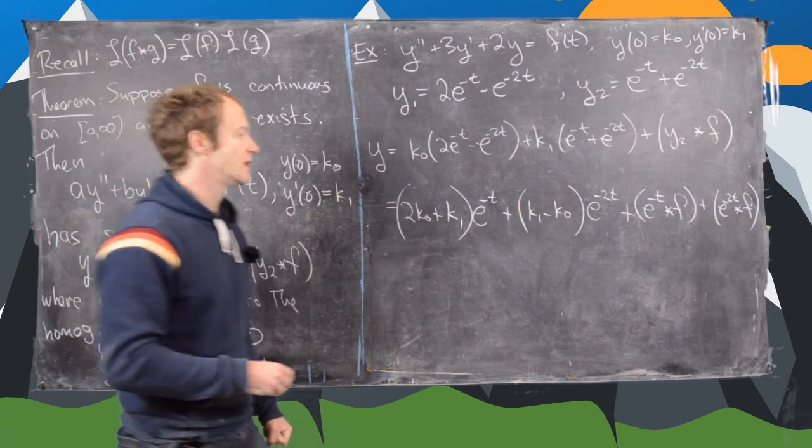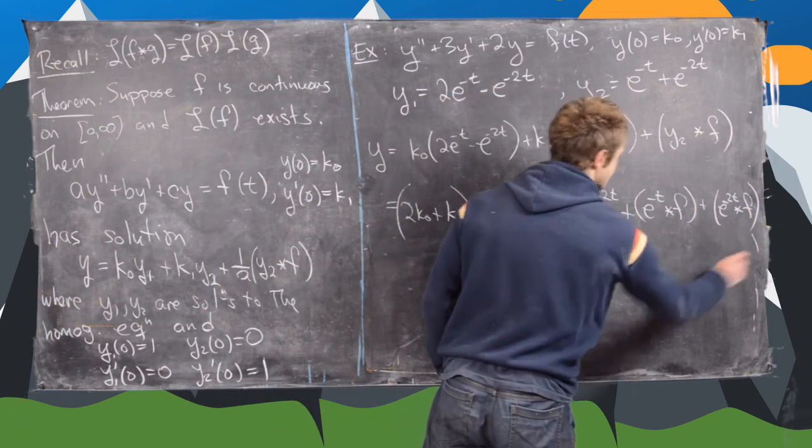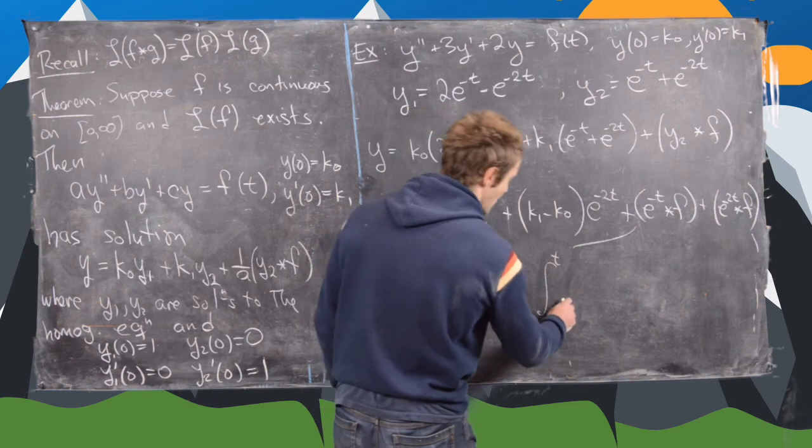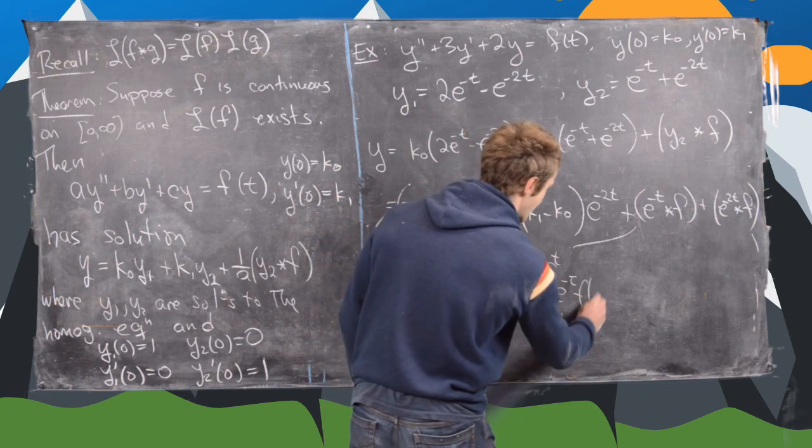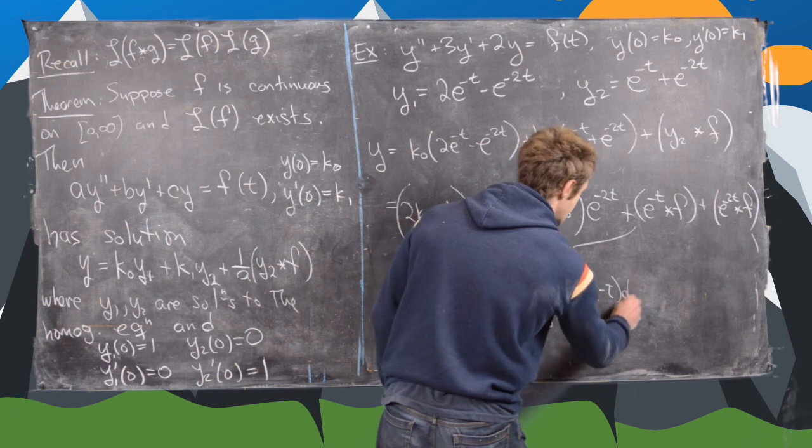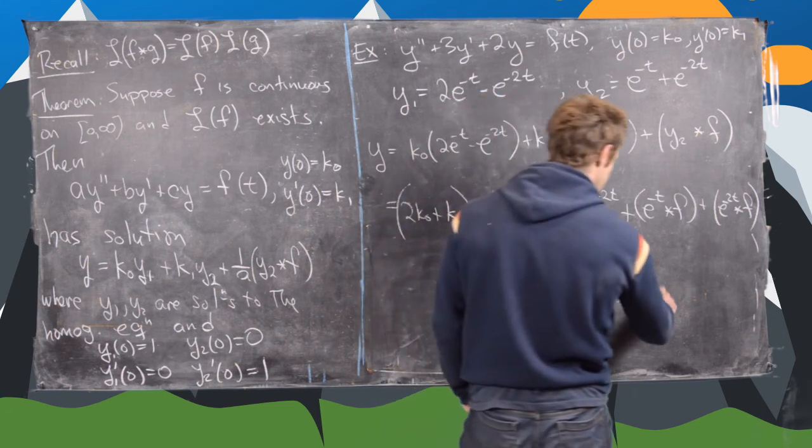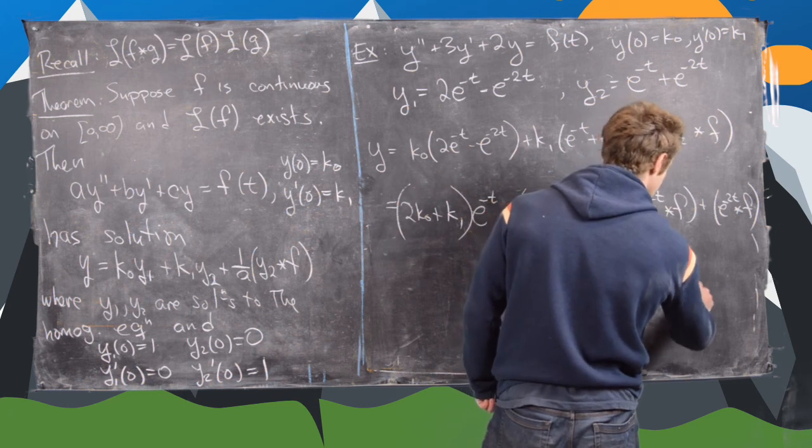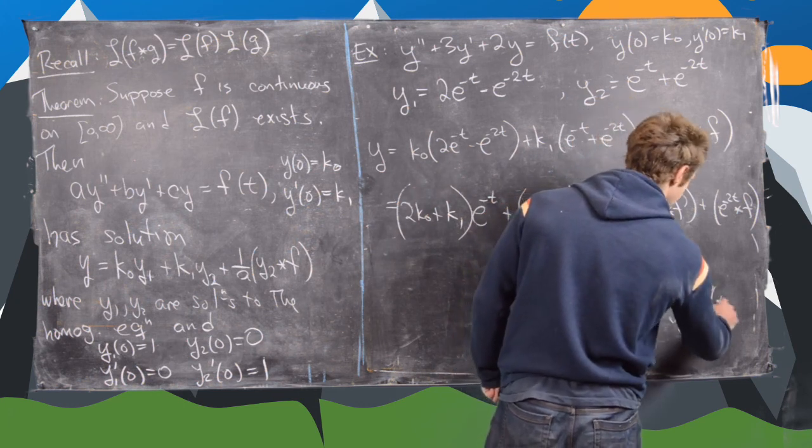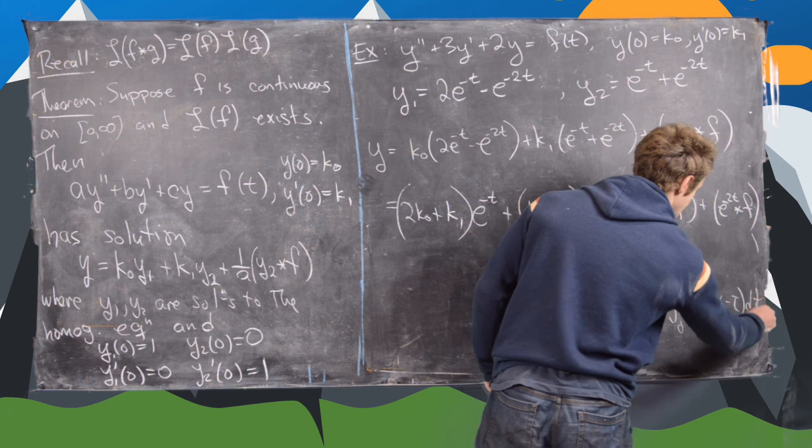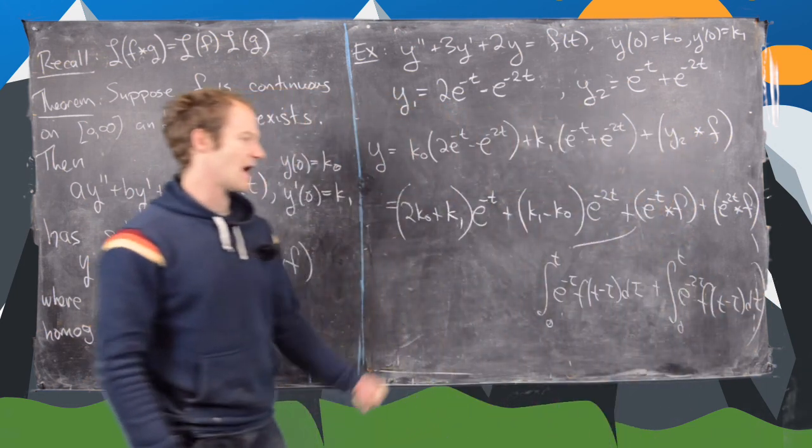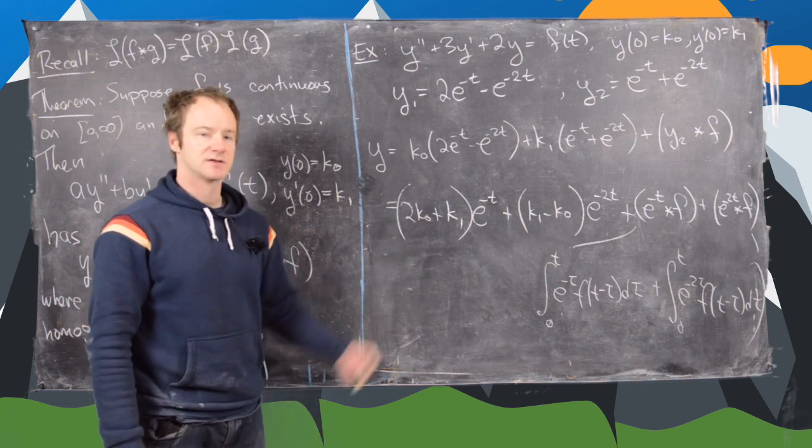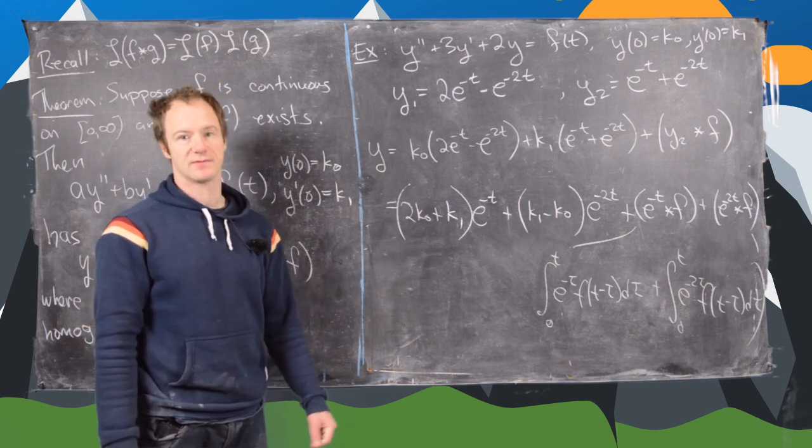Although what we could do is also write this as follows. So this is the integral from zero to t of e to the minus tau and then f of t minus tau d tau. And then this one is plus the integral from zero to t of e to the minus 2 tau and then f of t minus tau d tau. But I don't know, that's a little bit longer and it doesn't seem quite as nice and succinct as the first line. So I'll leave it up to you which one you like better.